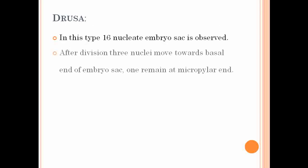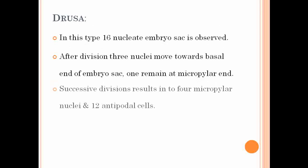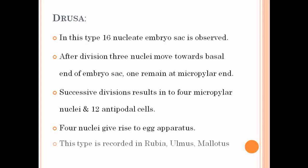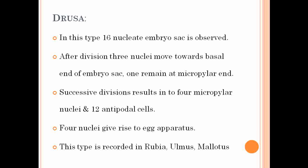The Drusa type of embryo sac is observed in the genera Rubia, Ulmus, and Melilotus.